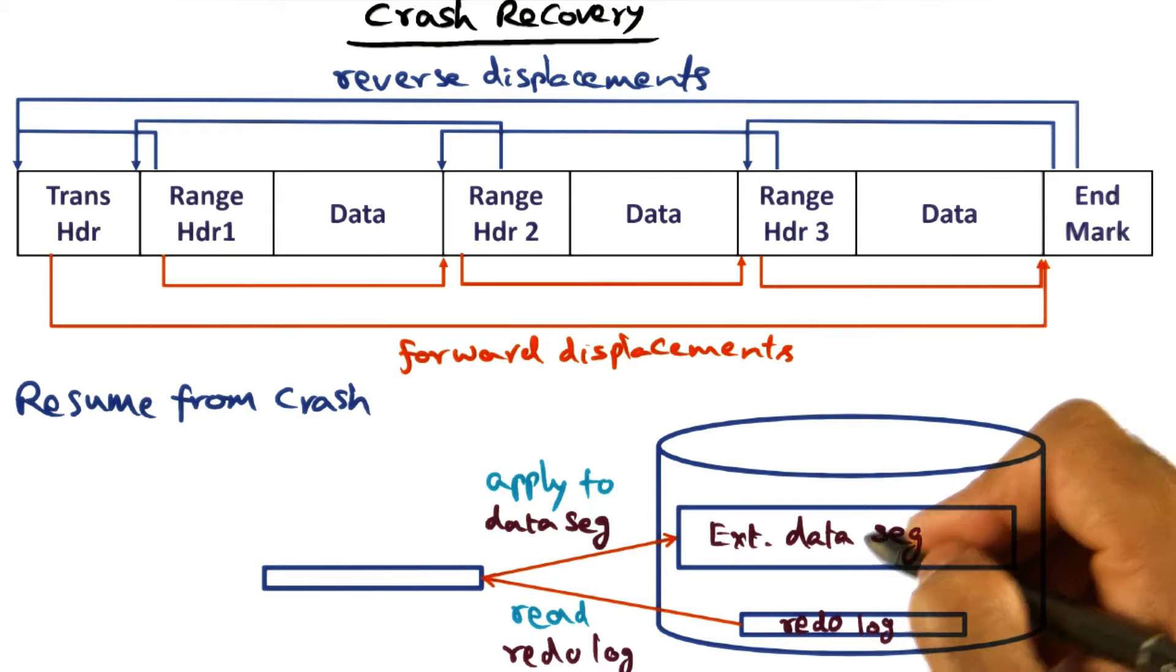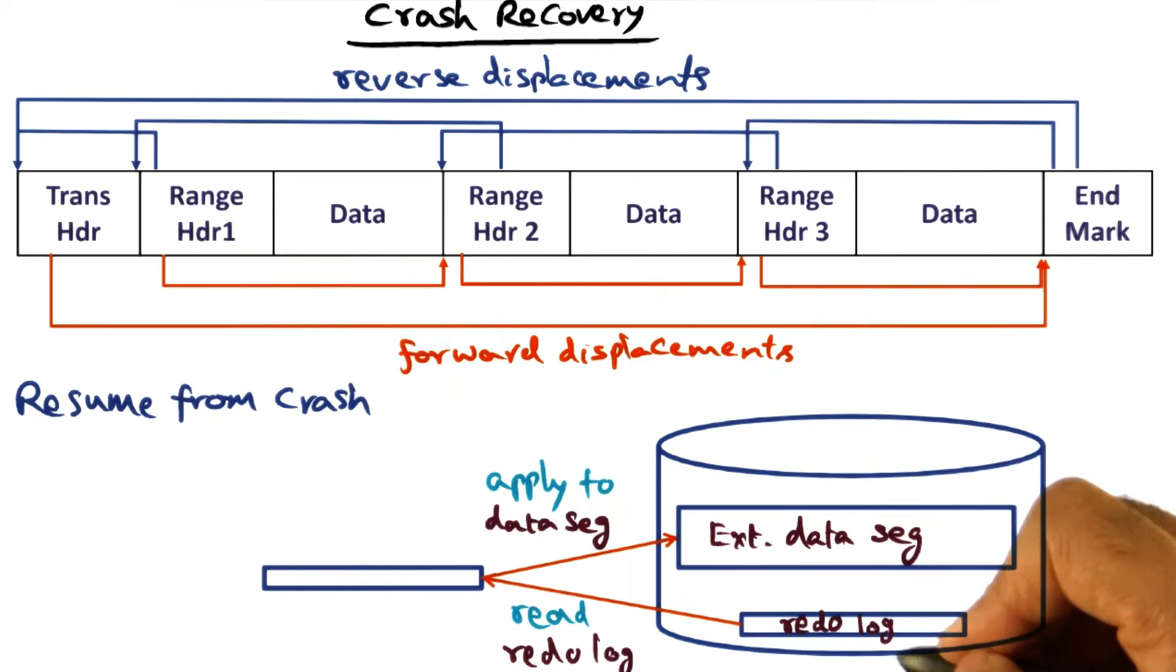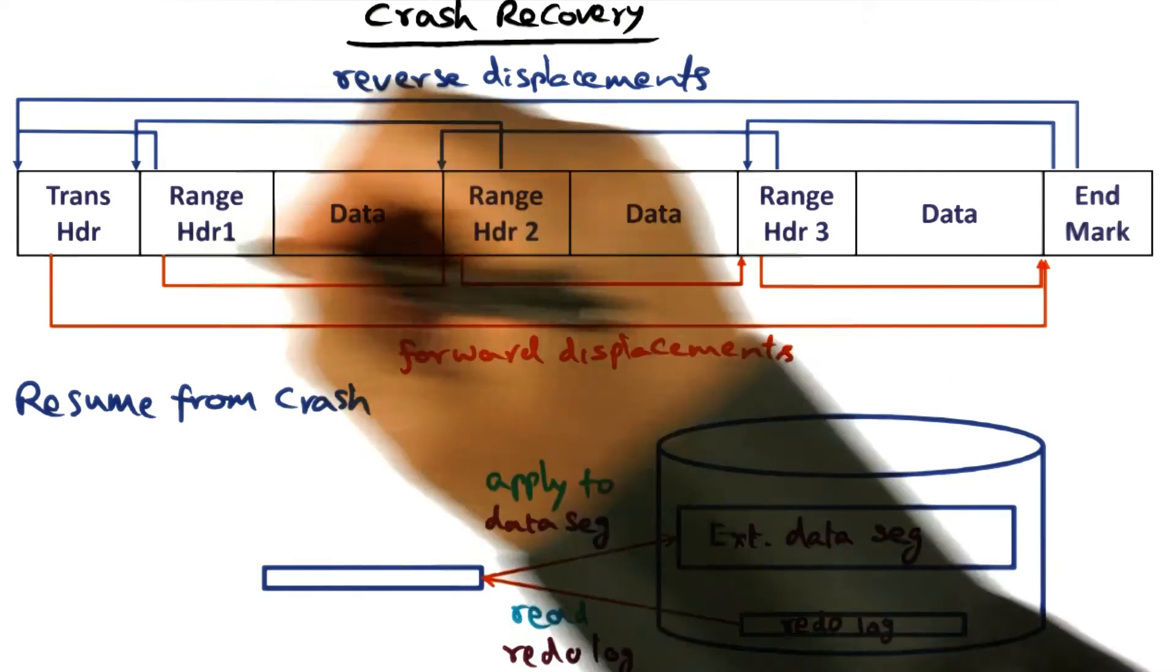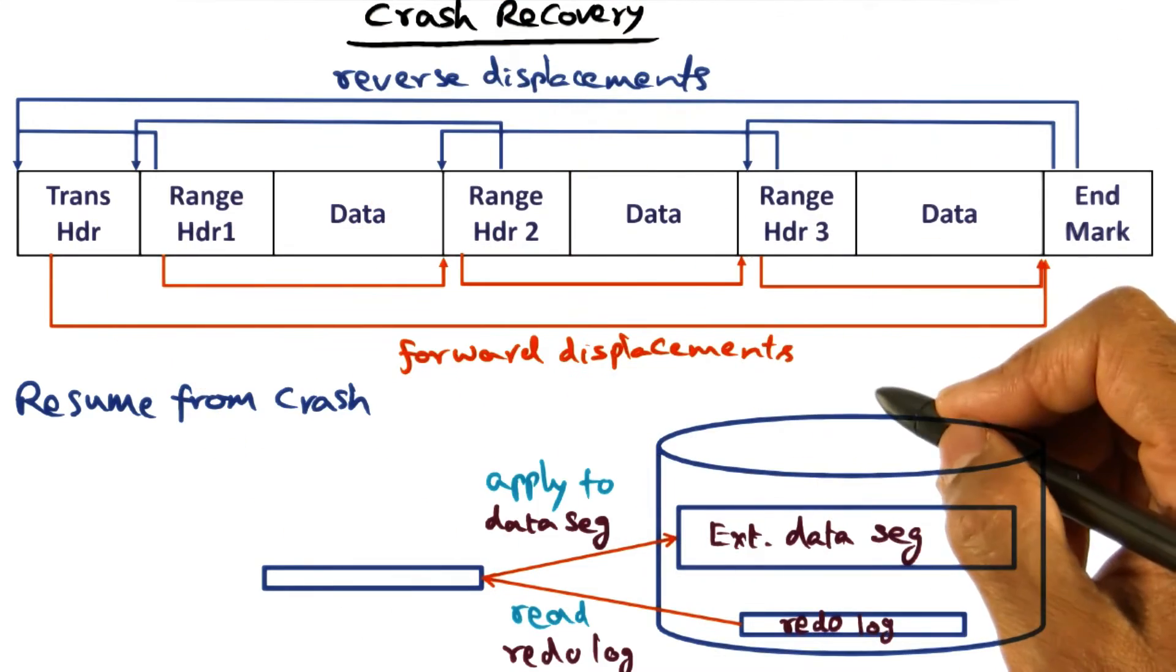Crash recovery is the whole reason for LRVM. What we're going to do when we resume from crash is read the redo log starting from the tail of the entire log segment. That's where the reverse displacements come into play.